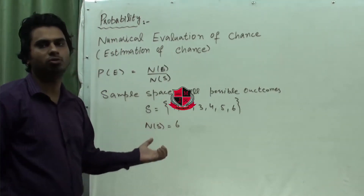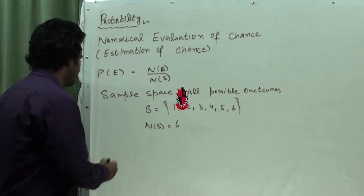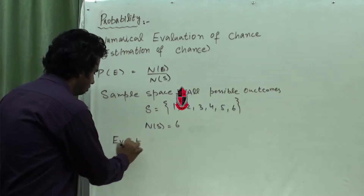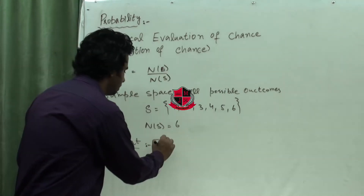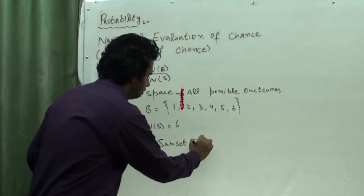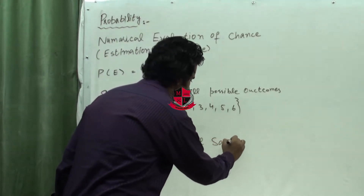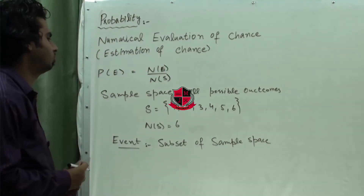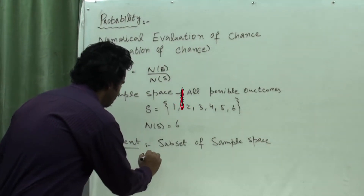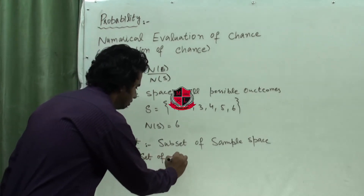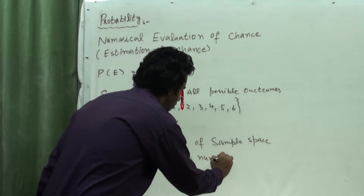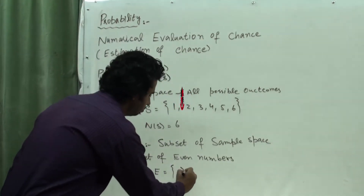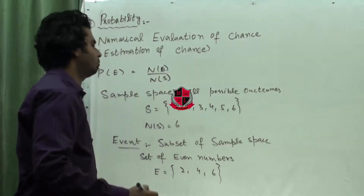So the sample space is {1, 2, 3, 4, 5, 6}. Next is event. The subset of sample space is known as an event. For example, if I say the set of even numbers from this sample space, those are 2, 4, 6. So this will be our event.